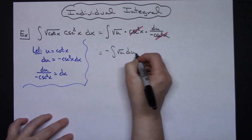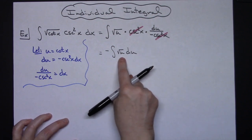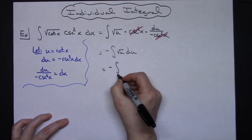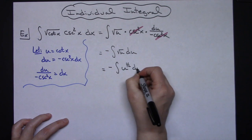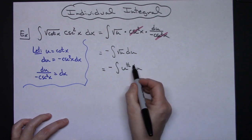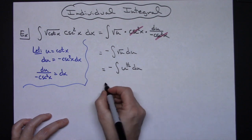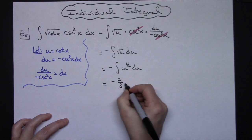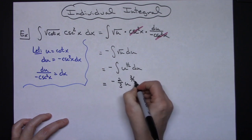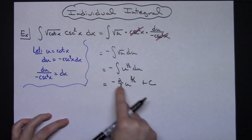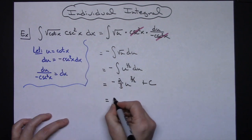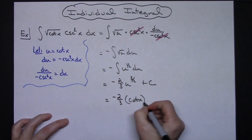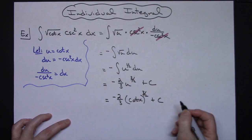To do that integral it'll be easier if we rewrite it as a power: negative the integral of u to the 1/2 du. Integrating by adding 1 to the exponent gives 3/2, and multiplying in front by the reciprocal gives negative 2/3 u to the 3/2 plus c. Replacing u with what we originally set it equal to gives negative 2/3 times cotangent x raised to the 3/2 power plus c.